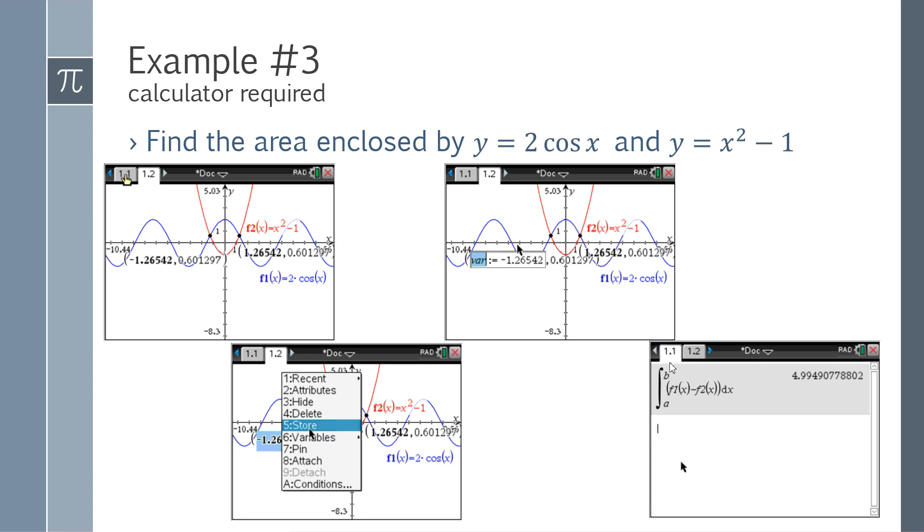And then my top function was the blue F1 of X. The bottom is the F2 of X of F1 of X minus F2 of X. And it does everything for me, and I can round this value now for my answers.